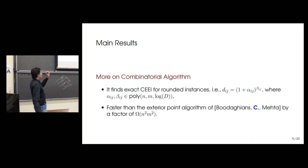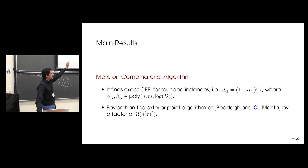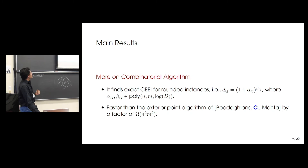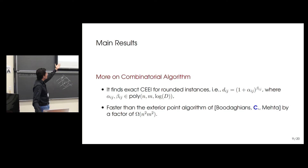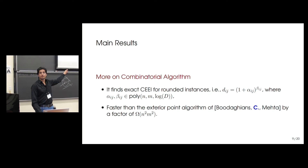For specific dis-utility types our algorithm finds an exact competitive equilibrium in polynomial time. In particular, if entries of the dis-utility matrix are of the form d_{ij} = (1 + α_{ij})^{β_{ij}}, where α-inverses are polynomially bounded and β's are polynomially bounded, then we find an exact equilibrium in polynomial time. This is already faster than the exterior point algorithm, and likely faster than the bound in the paper due to recent breakthroughs in max-flow results.